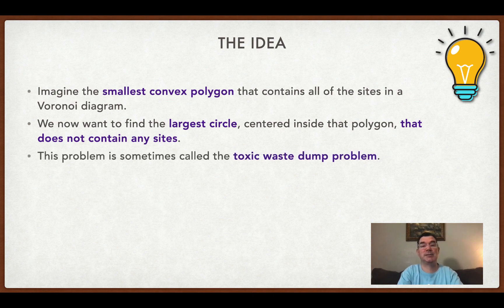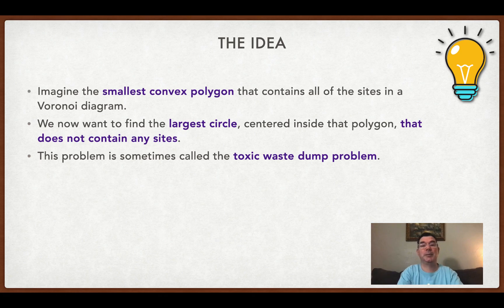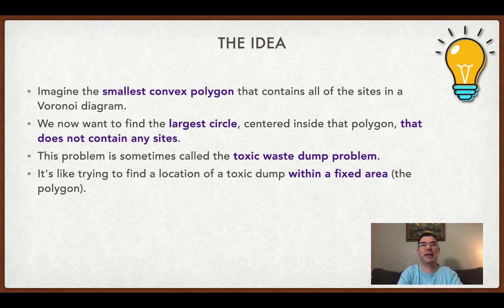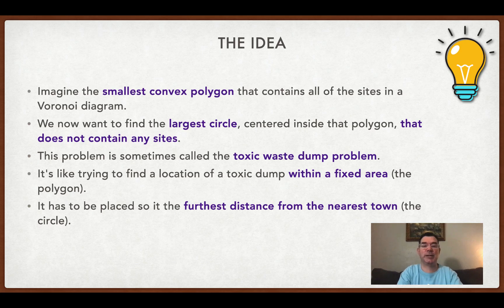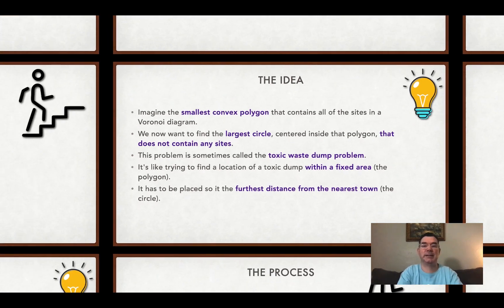It's sometimes called the toxic waste dump problem because you're trying to find the location of a toxic waste dump that is as far away as possible from any of the cities or sites that are inside that Voronoi diagram. And it has to be placed, this toxic waste dump is placed furthest from the nearest town. So that's basically the circle.